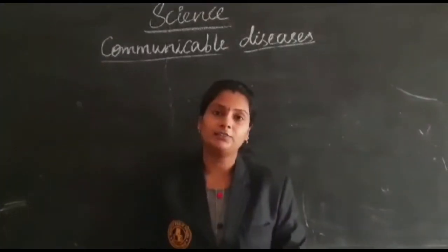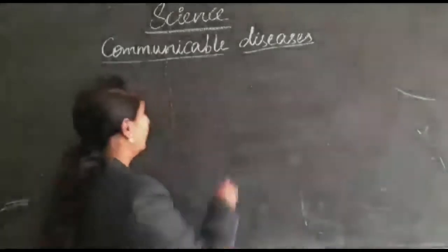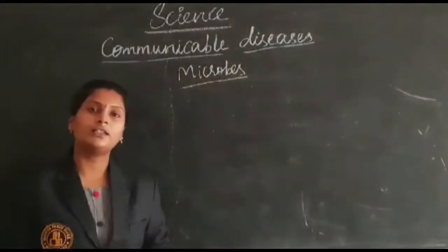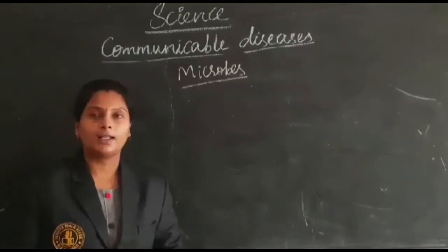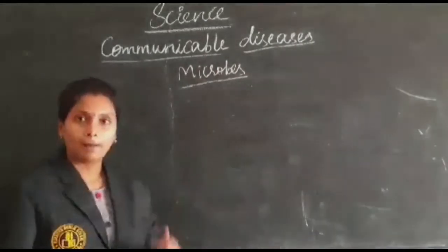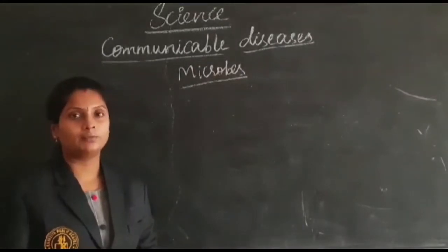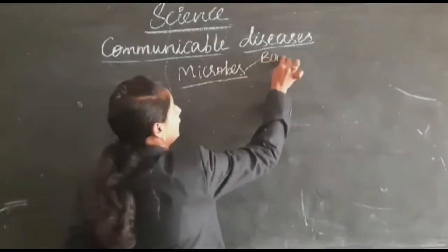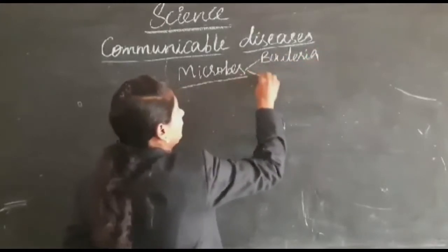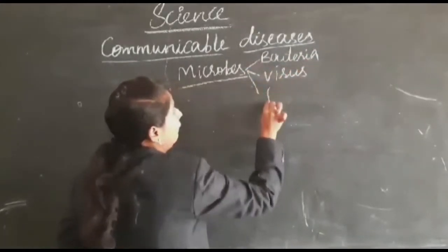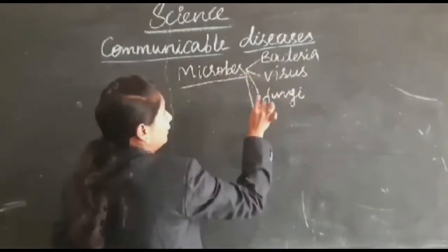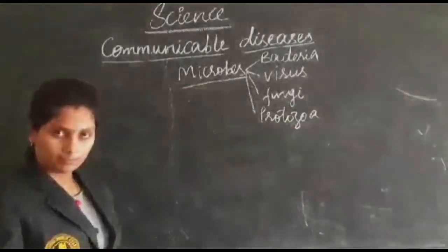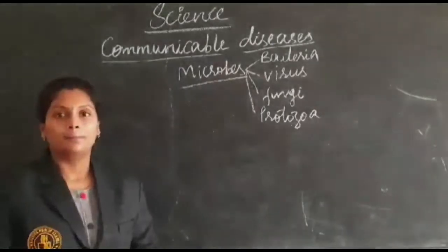In our previous classes we have discussed about the microbes. So what are microbes? The organisms which we cannot see with our eyes but we can observe only under a powerful microscope — those are the microbes. They are also living organisms. They are like bacteria, virus, fungi, protozoa, etc. These are some kinds of microbes which we can observe under the microscope.